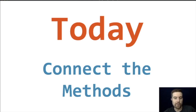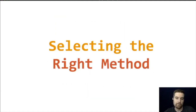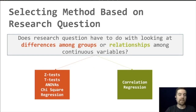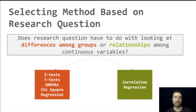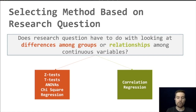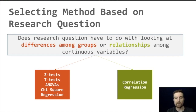The first thing we really want to do is connect the methods. The first thing is selecting the right method. Sometimes you're going to select a method based on your research question — you won't have your data yet and you'll decide what your data will look like. So you may just start with the research question, which can usually be split into two types.